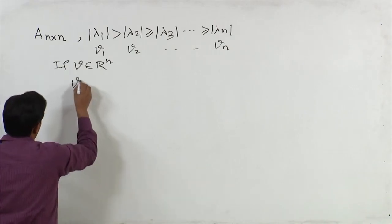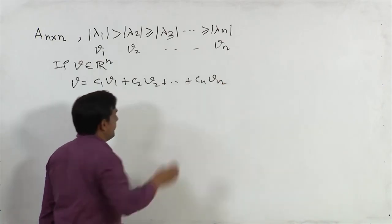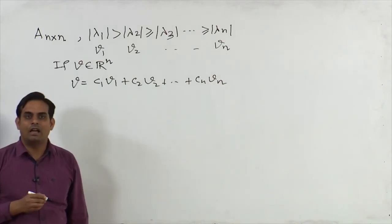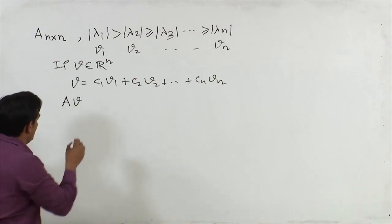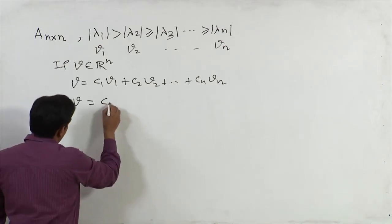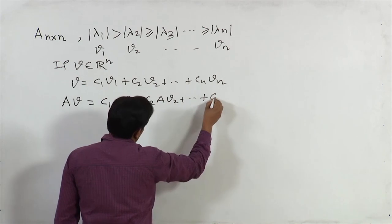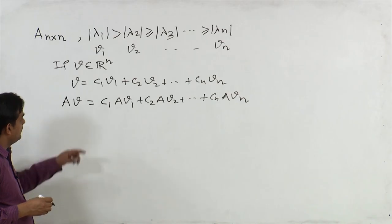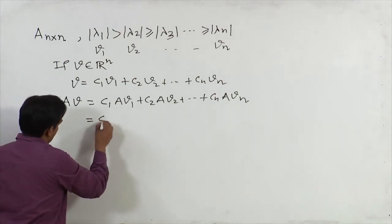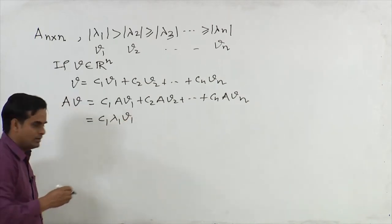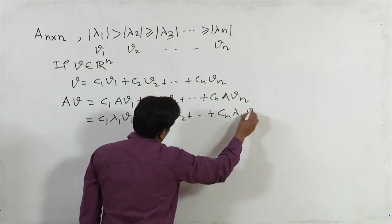We write v = c1*v1 + c2*v2 + ... + cn*vn, where c1, c2, ..., cn are scalars. Multiplying both sides by A^n, we get A^n * v = c1 * A^n * v1 + c2 * A^n * v2 + ... + cn * A^n * vn. Since v1 is an eigenvector corresponding to lambda 1, we can write c1 * lambda1 * v1, and similarly for the other terms.